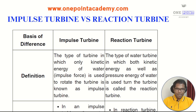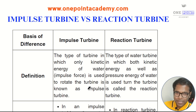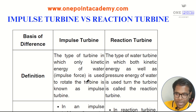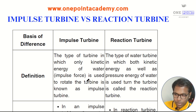Let's start with the first difference, based on the definition itself. Impulse turbine: the type of turbine in which only kinetic energy of the water, that is the impulse force, is used to rotate the turbine. Reaction turbine: the type of water turbine in which both kinetic energy as well as pressure energy of water is used to turn the turbine.